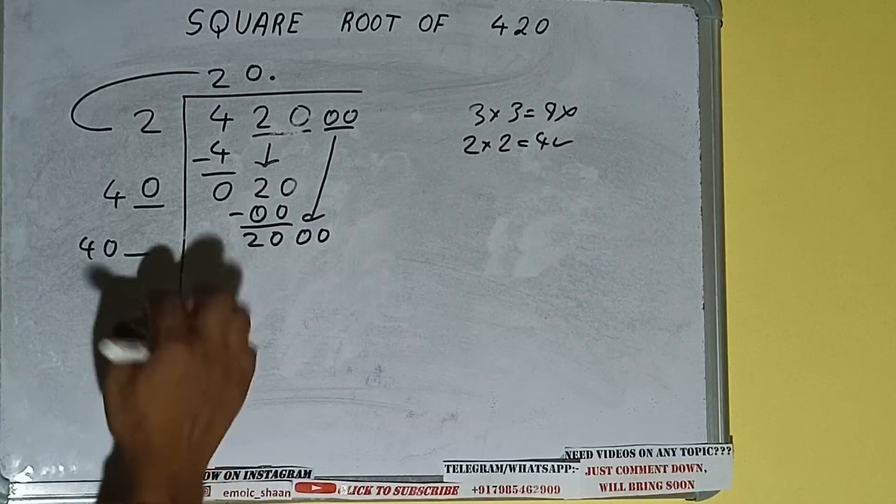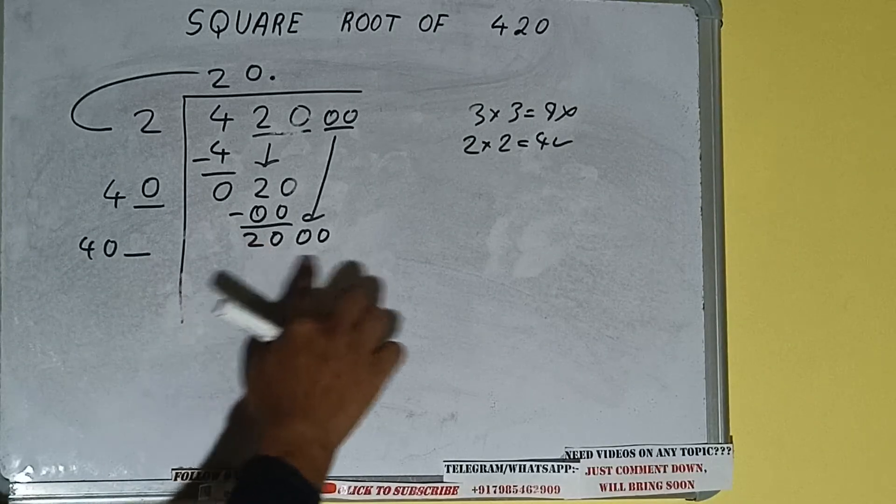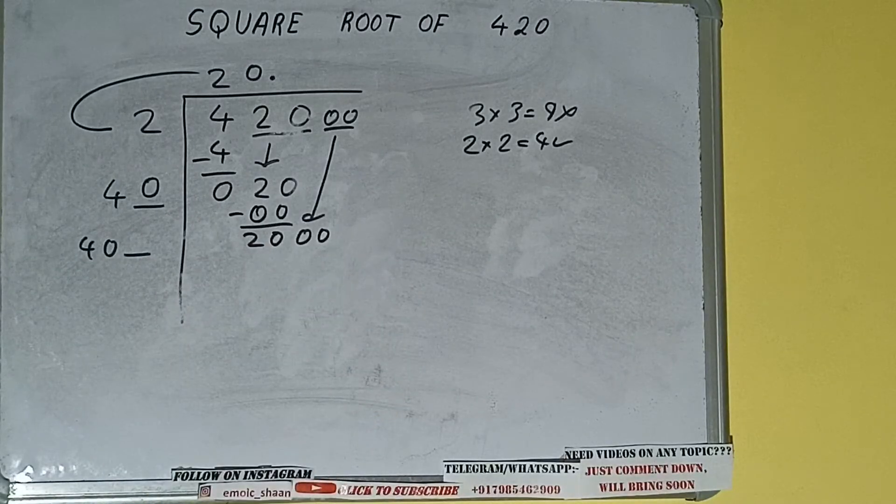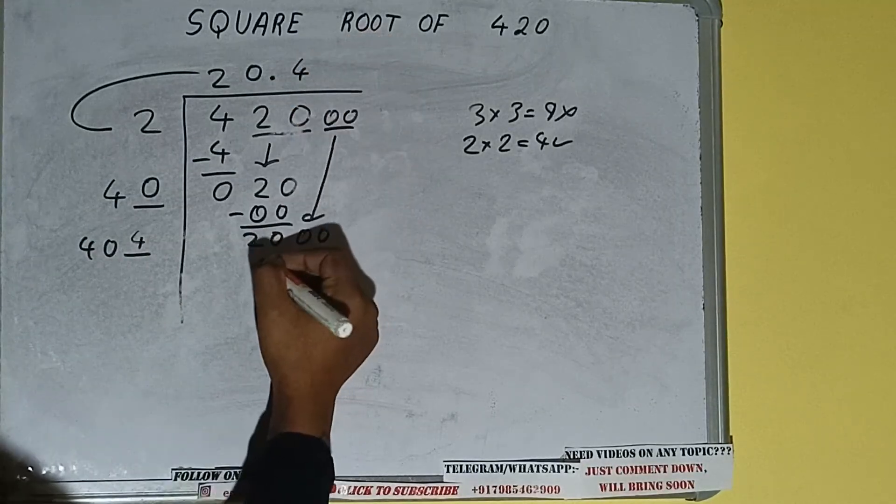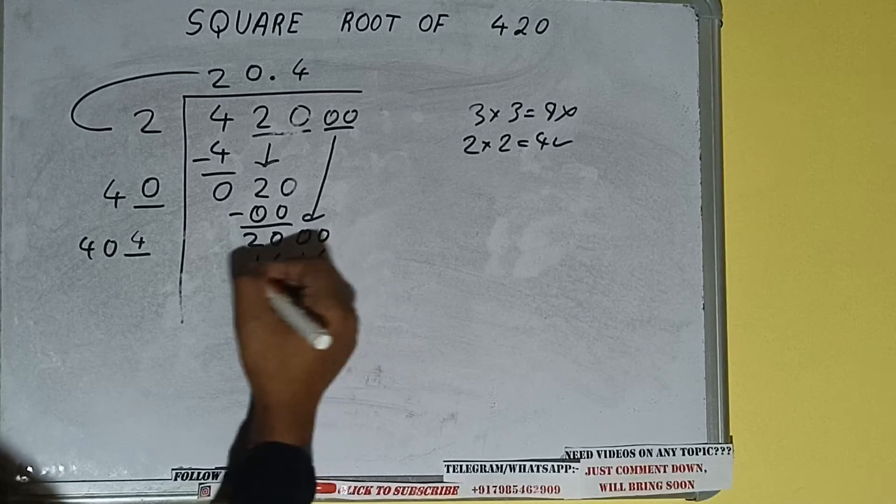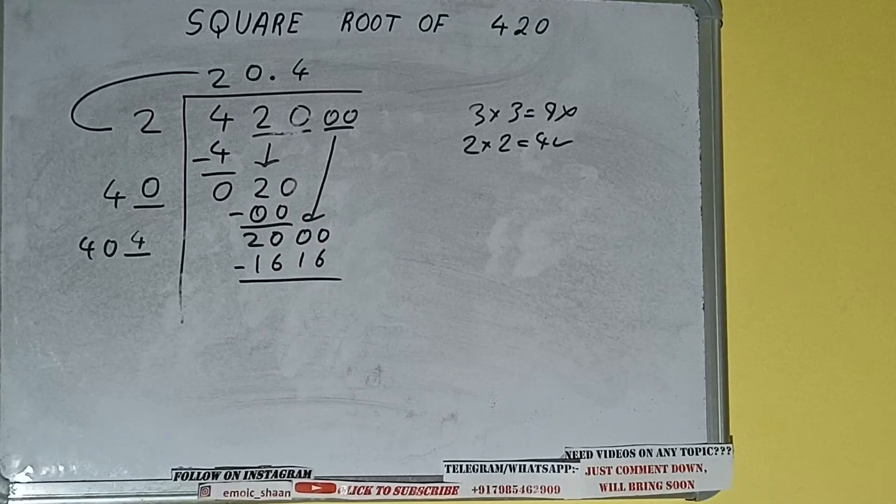Now if we write 5 here, we'll get a number greater than 2000, so we cannot write 5. We have to write 4 here. So 4 here and 4 here, it will be 1616. Subtract and we'll be left with 384.